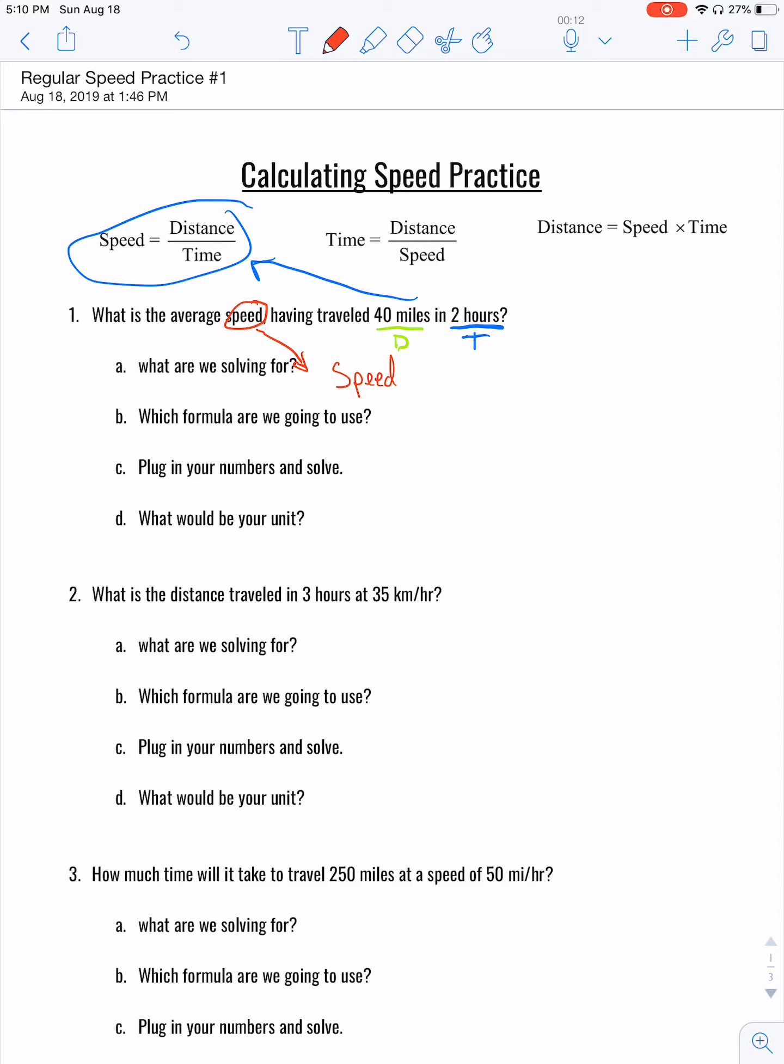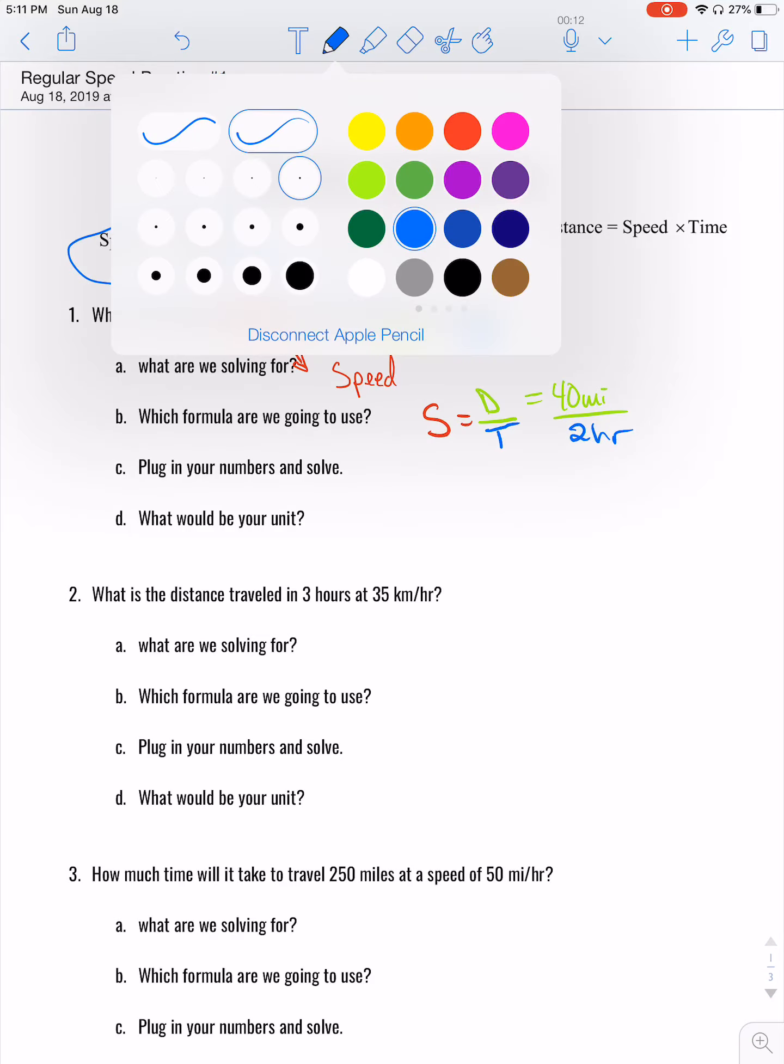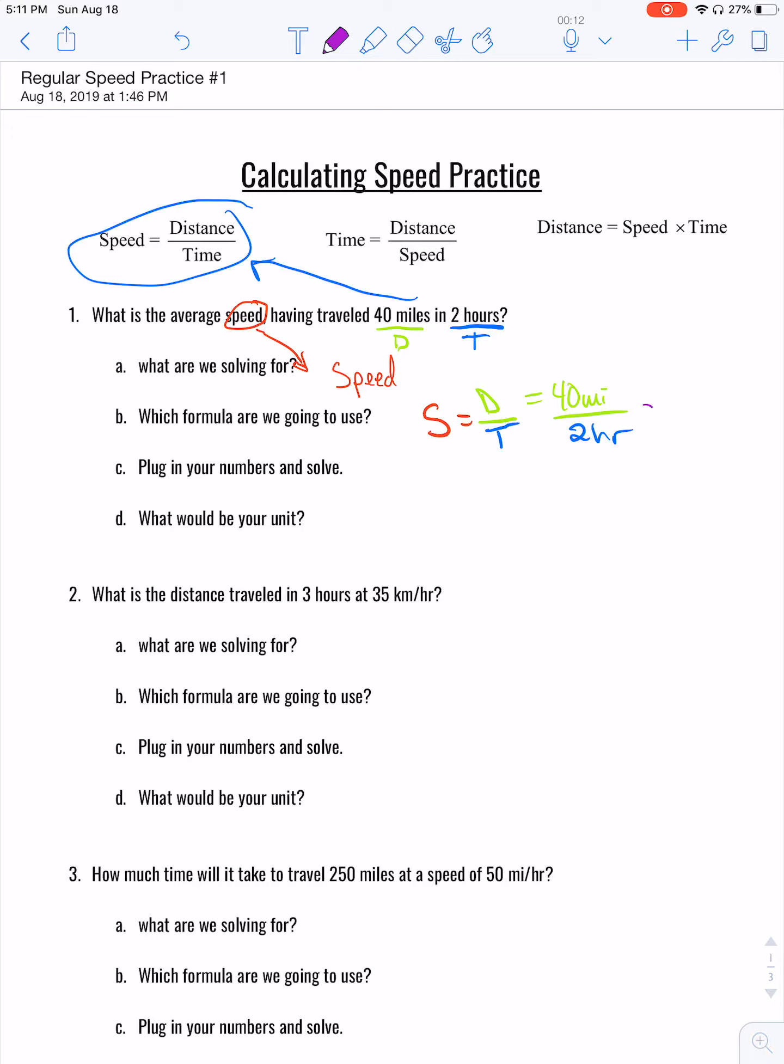The formula that we will use is speed equals distance divided by time. So all we have to do is now plug in our numbers into the correct location. So D is going to be 40 miles and then our time is going to be two hours. We're going to go ahead and solve it.